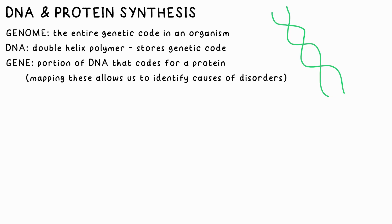The Human Genome Project completed its initial goal in 2003, when scientists mapped out what every gene is responsible for coding. This is powerful because it can help us identify what genes cause diseases or inherited disorders.